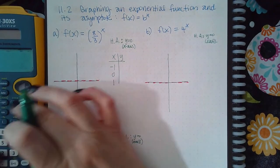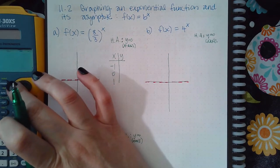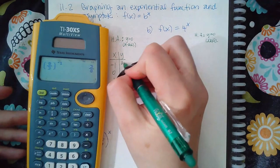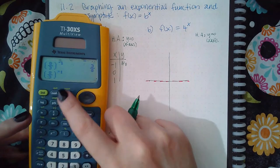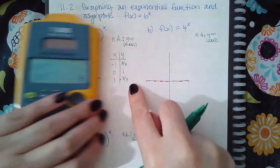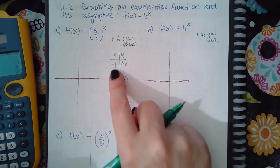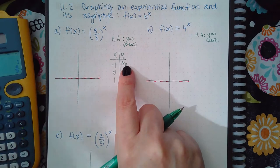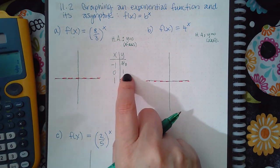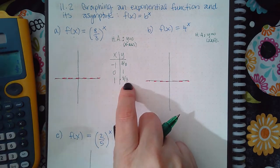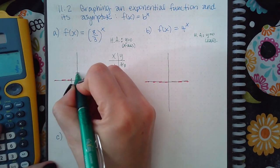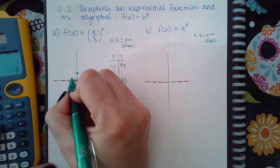For the first function, (8/3) raised to the negative one gives three-eighths. Raised to the zero gives one. Raised to the one gives eight-thirds. These are not nice numbers, so you'll have to use the icon that allows you to plot points — type in negative one for x and three-eighths for y, then click plot. Then plug zero for x and one for y, and click plot again. Then one for x and eight-thirds for y, and click plot again. Then exit out and it will graph the points for you.